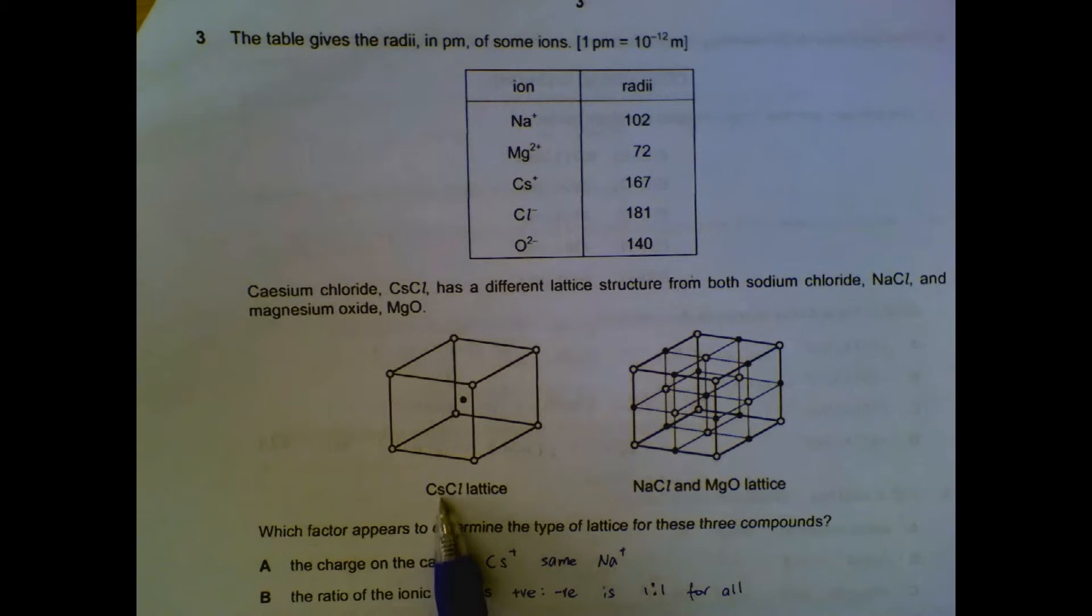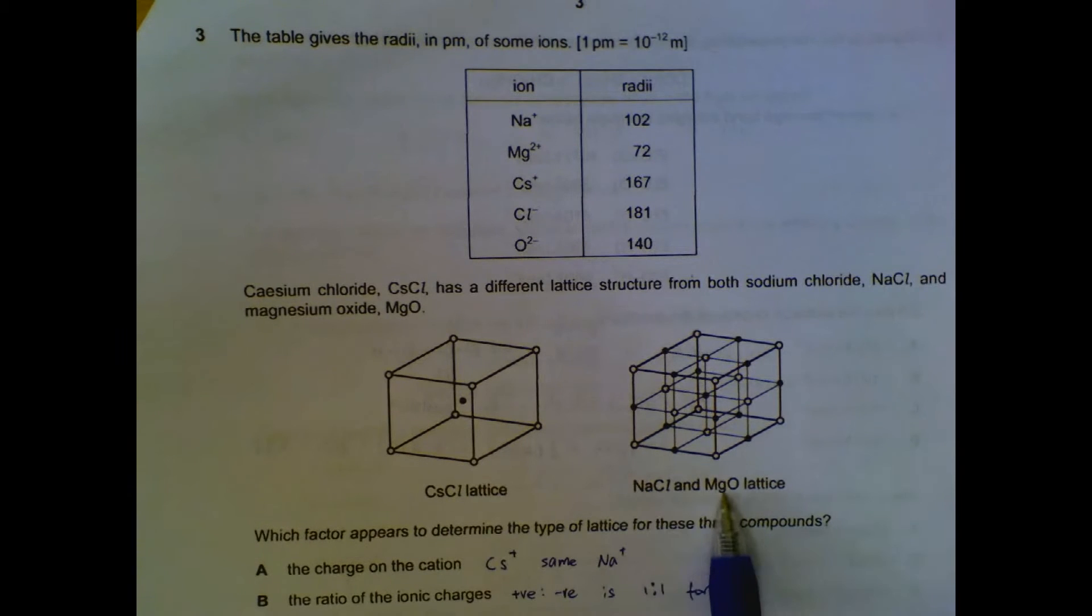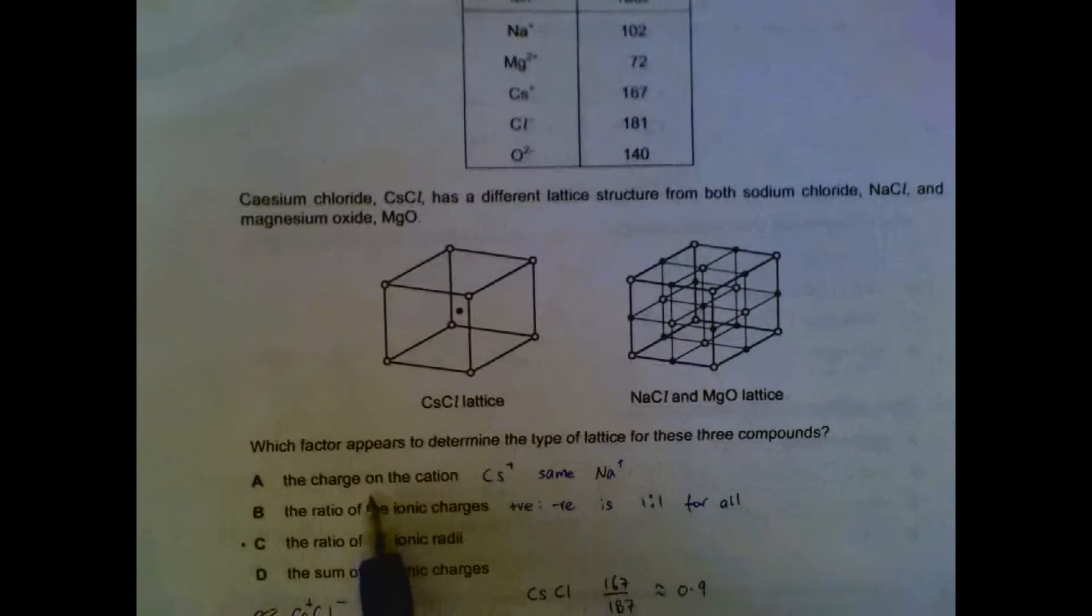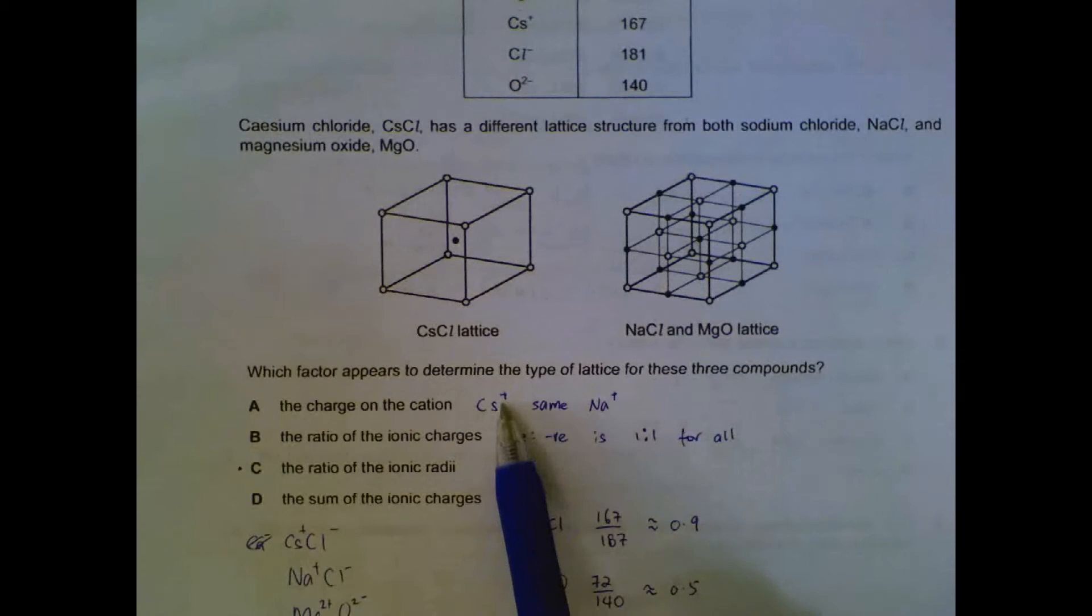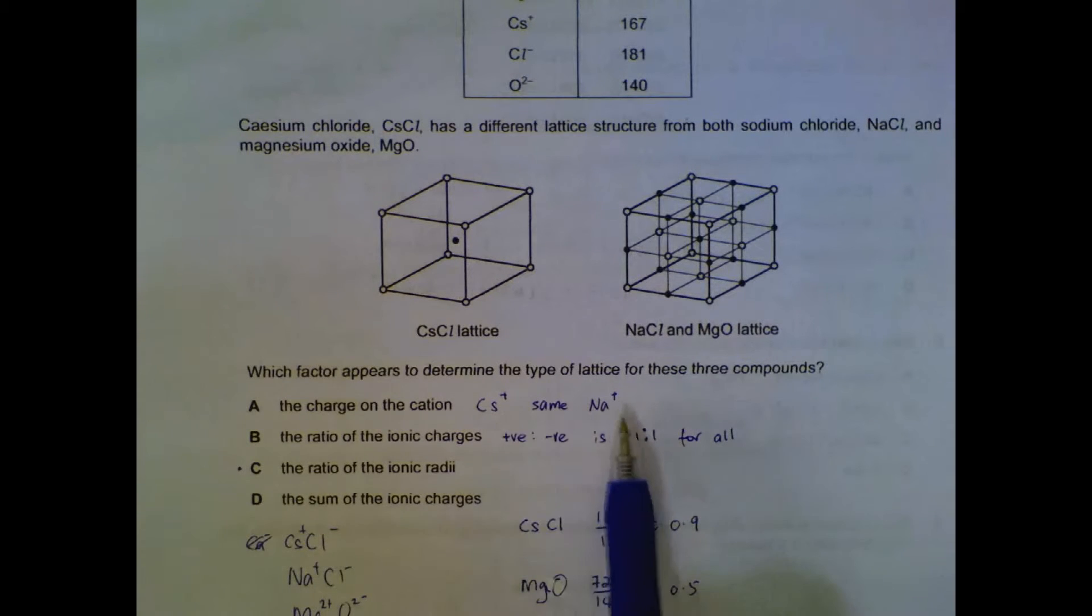Number three: cesium chloride has this lattice, sodium chloride and magnesium oxide has this lattice. So what appears to determine the type of lattice? The charge on the cation: for cesium the charge is plus one. If it depends on the charge of the cation, then it should have the same lattice as sodium, which is also plus one. However, it's not the same for cesium and sodium, so the charge on the cation doesn't determine the lattice structure.